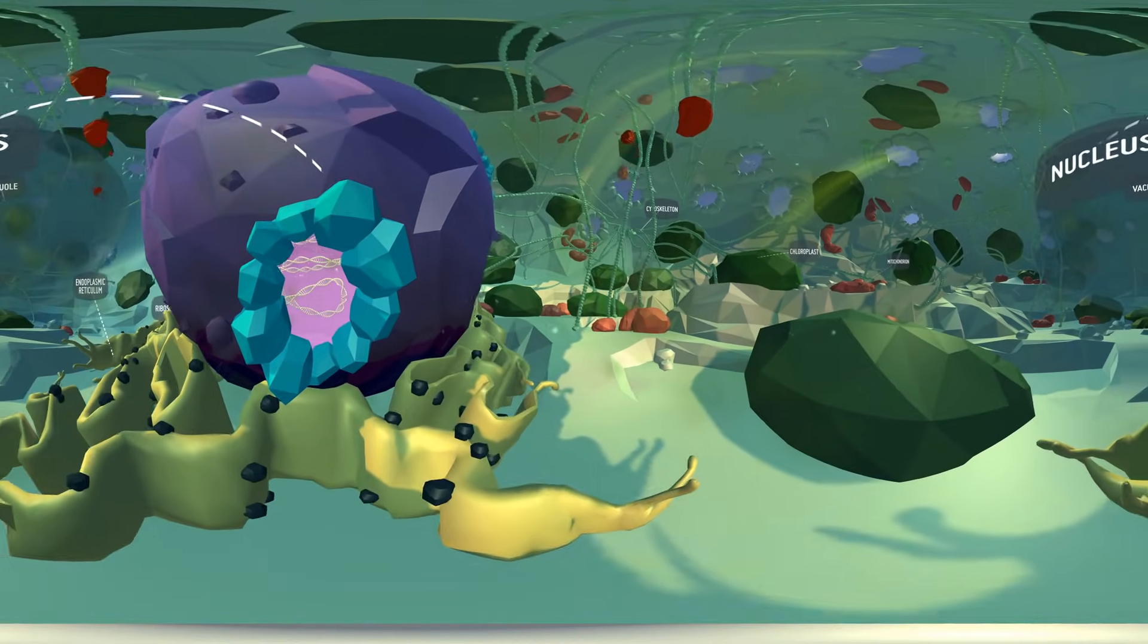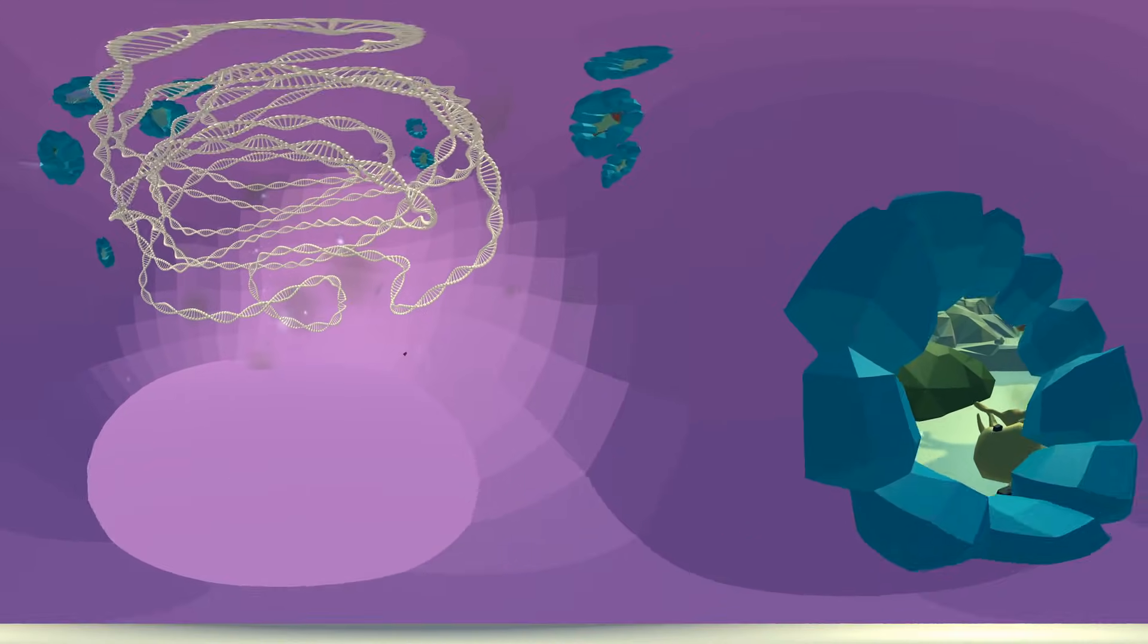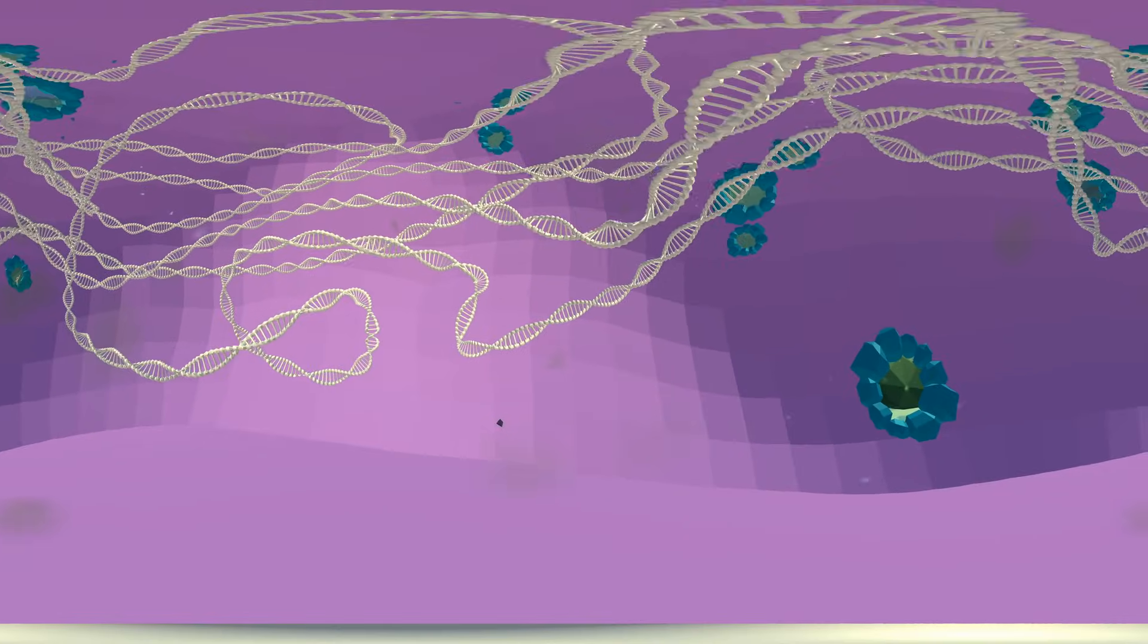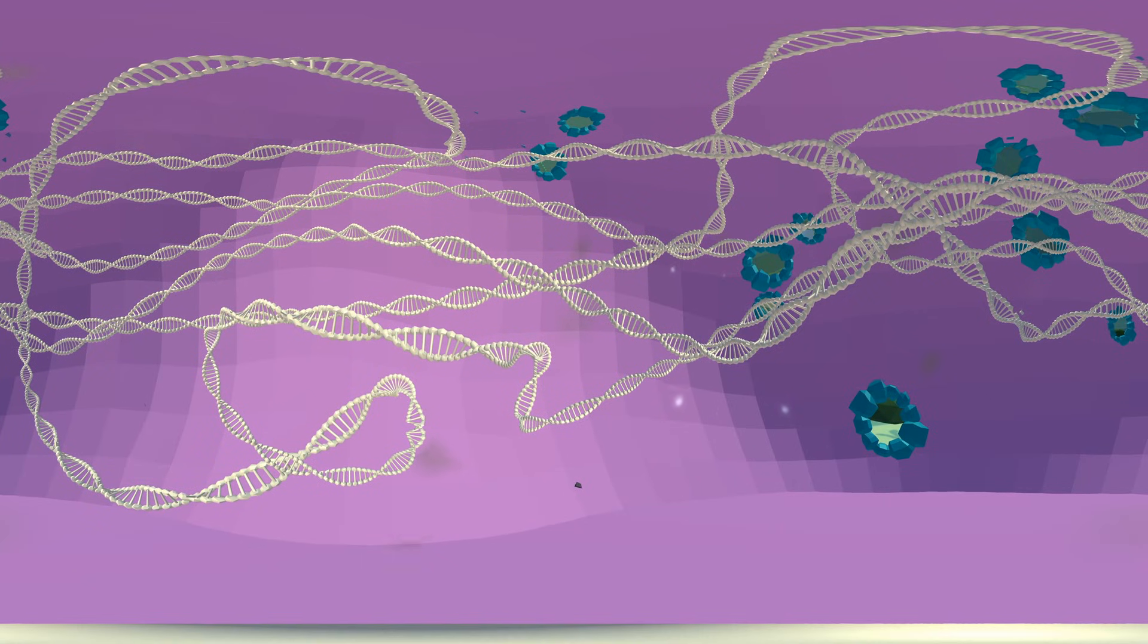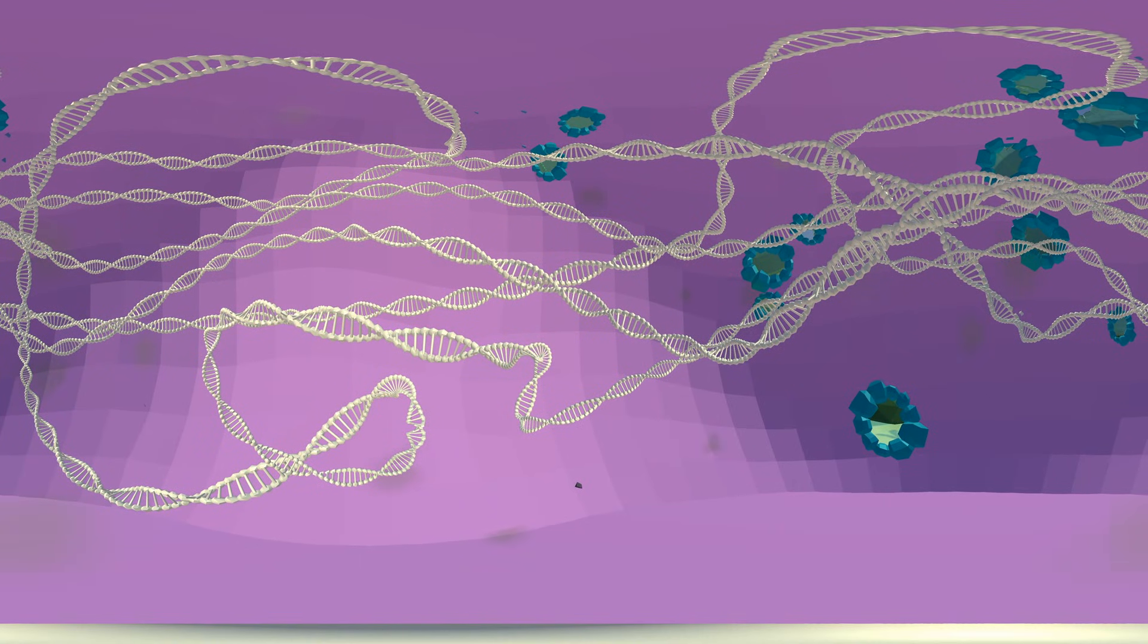You are heading through a nuclear pore and into the plant cell nucleus. The nucleus is home to a plant's DNA. Like metres and metres of cell blueprints, the DNA makes the plant what it is.